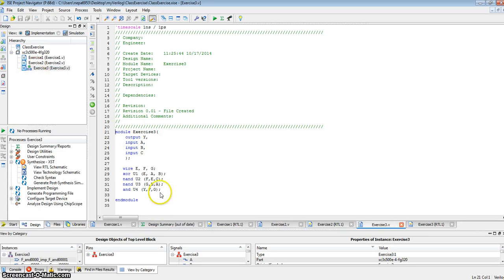And in exercise three, we took a look at how to describe a structural module by taking different built-in gates, exclusive or, nands, and ands.